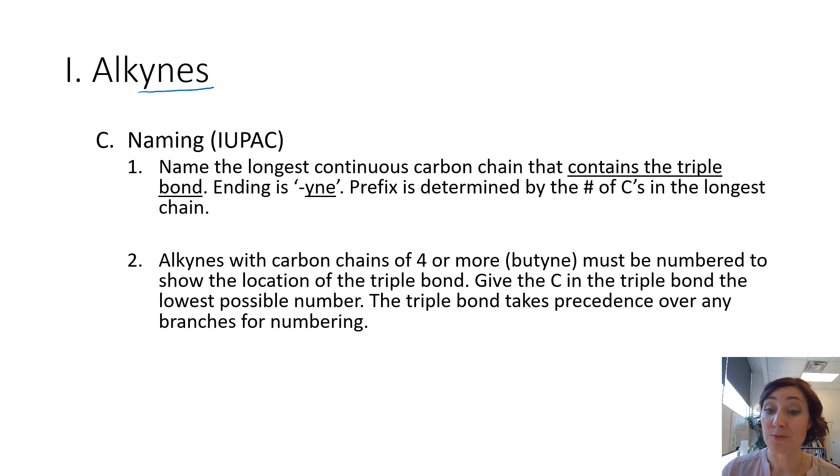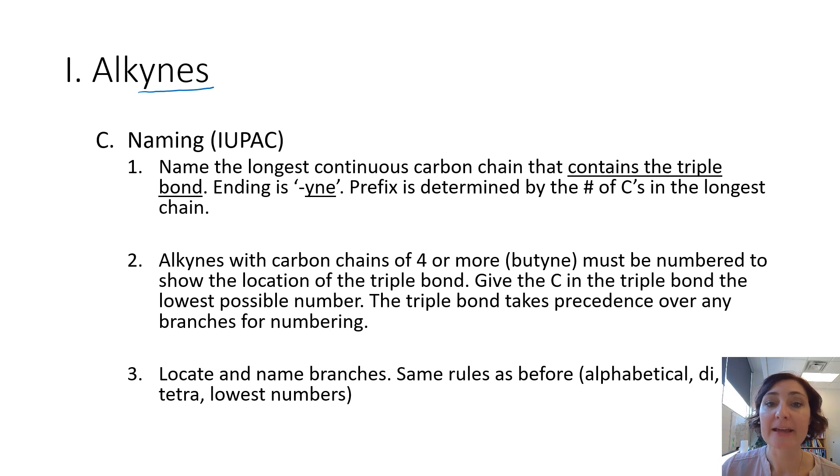Alkynes that have carbon chains of four or more, like butyne, have to be numbered to show the location of the triple bond. So this is the same as alkenes. Just ask yourself, could this triple bond be in another location? If it can, number it. When in doubt, add a number. You will not be counted off for having a number that's not necessary, but you will always be counted off if you forgot to include it and you needed to. So you're going to give the carbon in the triple bond precedence over every other branch or anything else that's going on in the structure. Number the chain to give that triple bond the lowest number carbon possible.